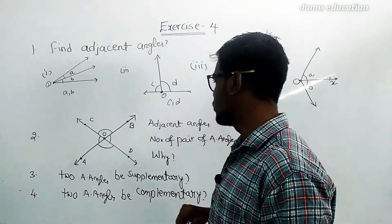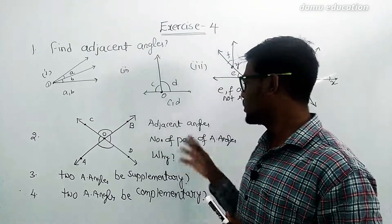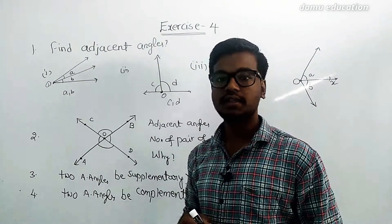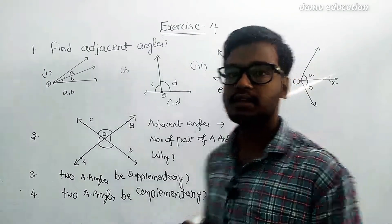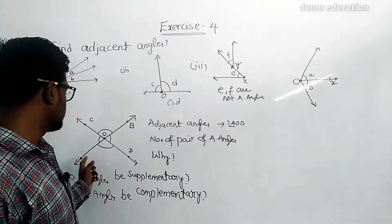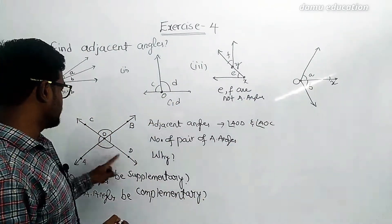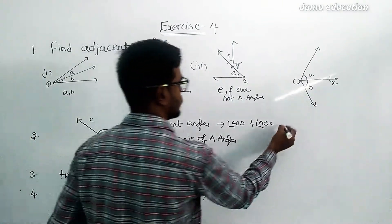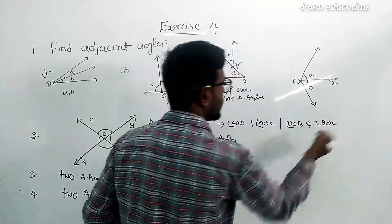Now for the second part, from the given figure we need to find how many pairs of adjacent angles there are and why they are called adjacent. Starting with angle A: A is adjacent to D, and also adjacent to C. So angle AOD and its neighboring angle are two adjacent angles.